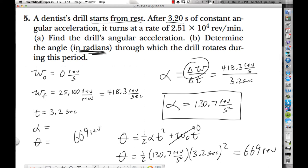669 revolutions, one revolution is two pi radians, so this will give us the answer in radians which is 4205.